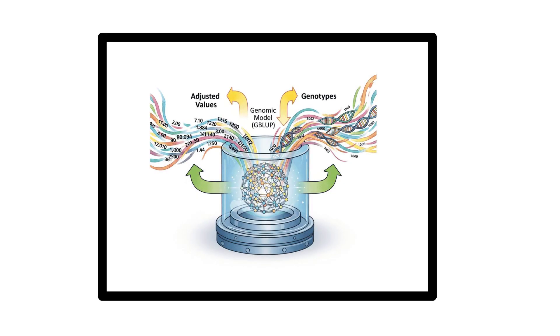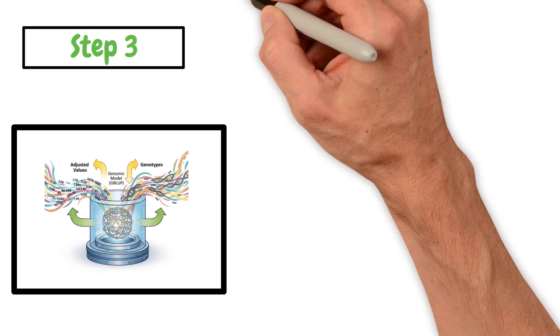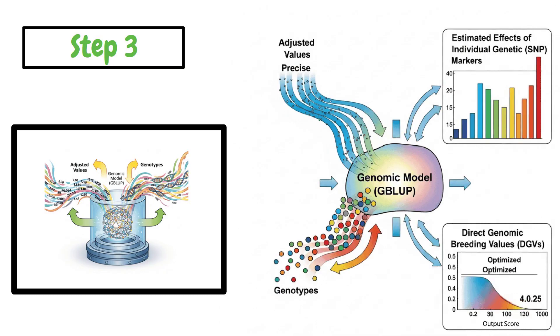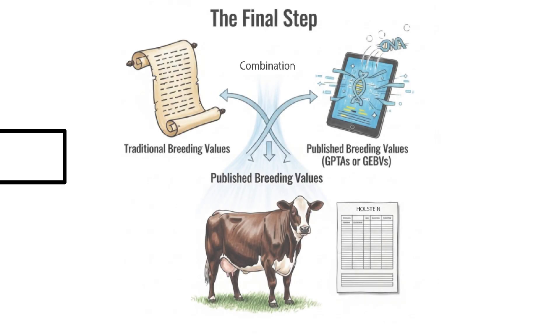Step 3: Those adjusted values, along with the genotypes, go into a genomic prediction model, which estimates effects of individual genetic markers and produces direct genomic breeding values. Step 4: Finally, we combine the traditional and genomic values for genotyped animals to get the published breeding values.